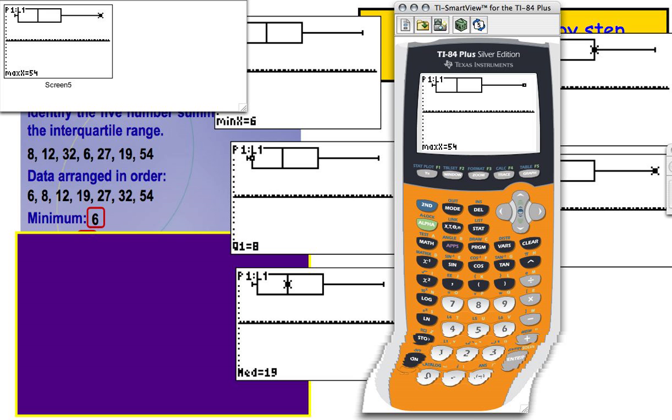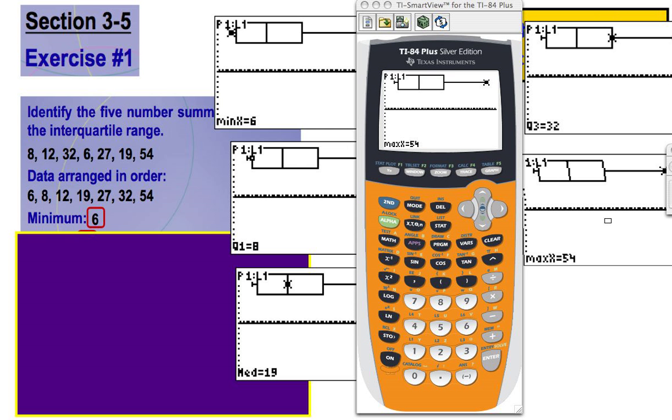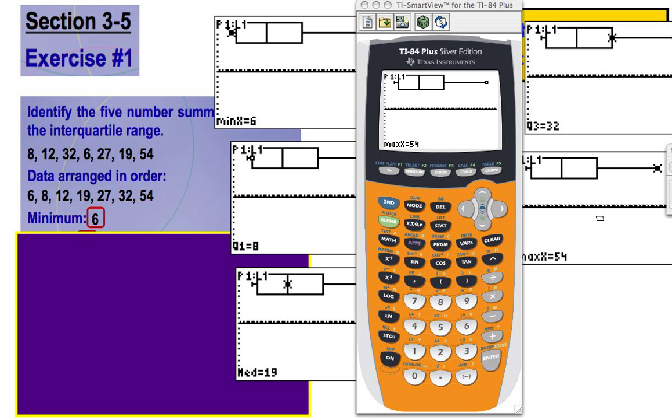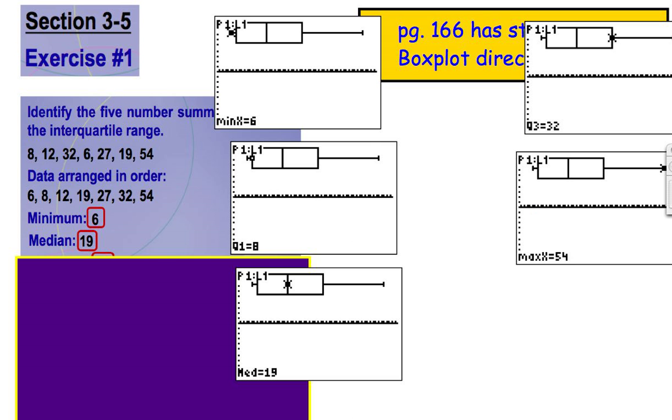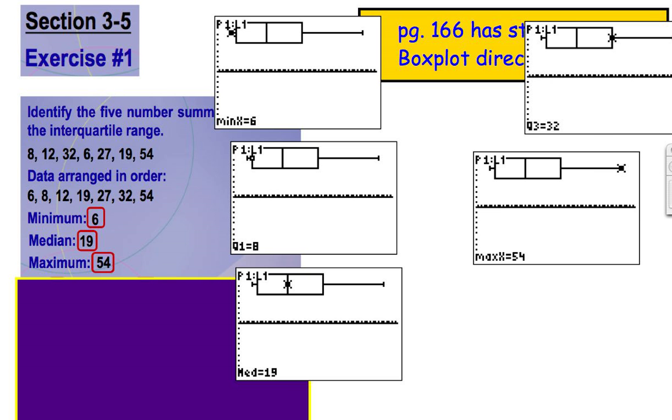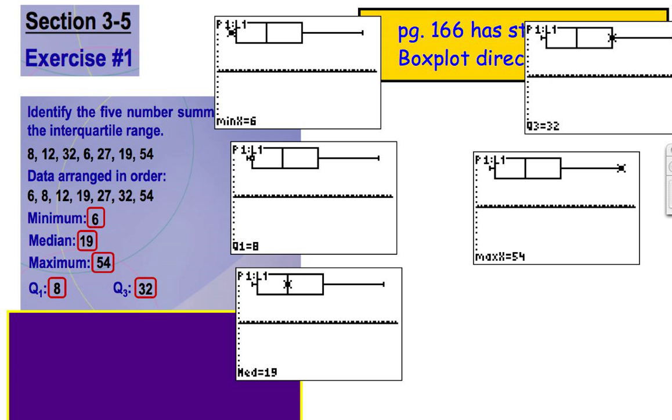Alright, so now just real quickly so we can see all this stuff, let me just kind of move some stuff around here a little bit. So if we scroll down here, we can see, let me just minimize the calculator. So our minimum is 6, we got that. Our median is 19, we got that. Our maximum is 54, great. Quartile 1 is 8, we got that. Our quartile 3 is 32. So there's quartile 3 right there. Let me change colors so it stands out. There was our min, there was our median, there's our max, quartile 1, quartile 3. That's great. We're getting everything we needed.